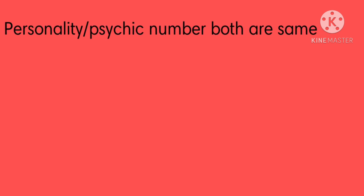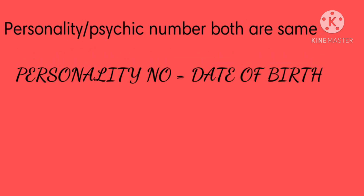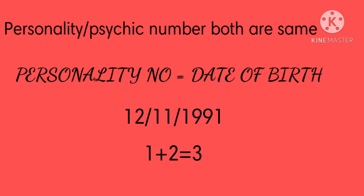The personality number is simply the date on which you are born. So for example, somebody who is born on 12th November 1991 — 12th would be their personality number. We then bring it to a single digit: 1 plus 2 equals 3, so 3 is their personality number.